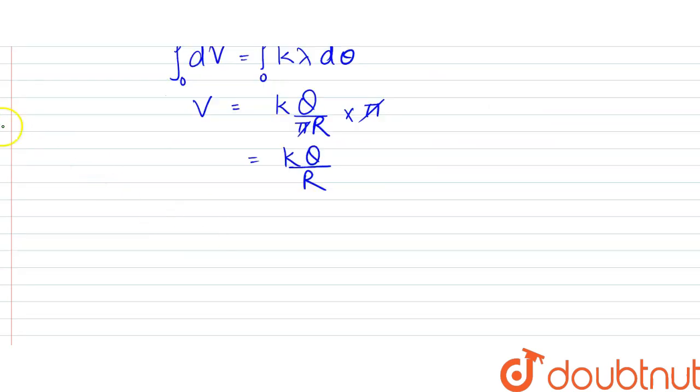Now when we substitute the value here, potential would be equal to 9 × 10^9, k has this value, q is given as 1.5 × 10^-9, all divided by r which is given as 0.5.